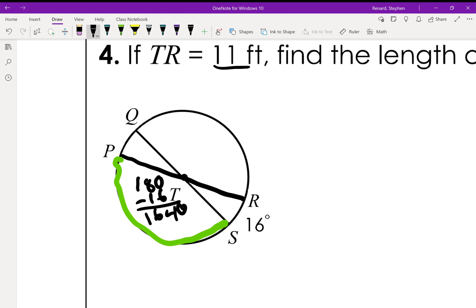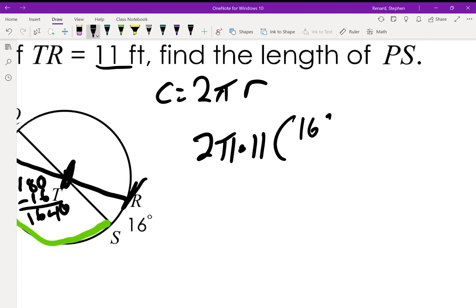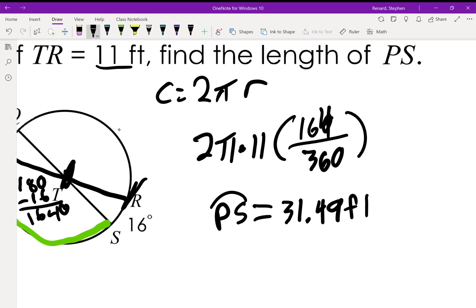TR is 11 feet. That is the radius. T to R, that's a radius. So we're going to use circumference equals 2 times π times r. We're going to go 2π times 11 times 164 over 360. And that gives us the length of arc PS equals 31.49 feet. I get 2 times π times 11 times 164 divided by 360.